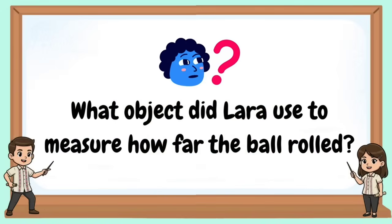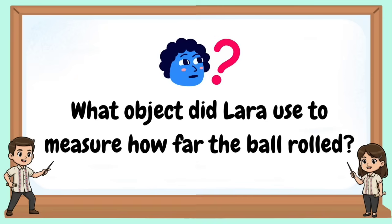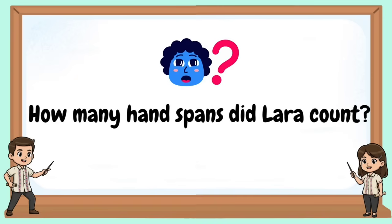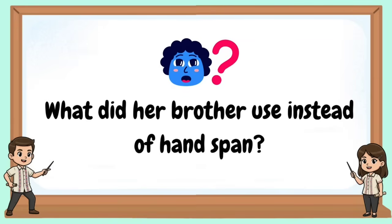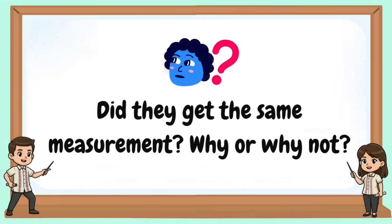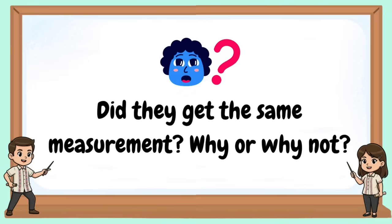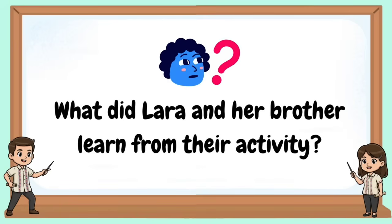What object did Lara use to measure how far the ball rolled? How many hand spans did Lara count? What did her brother use instead of hand span? Did they get the same measurement? Why or why not? What did Lara and her brother learn from their activity?